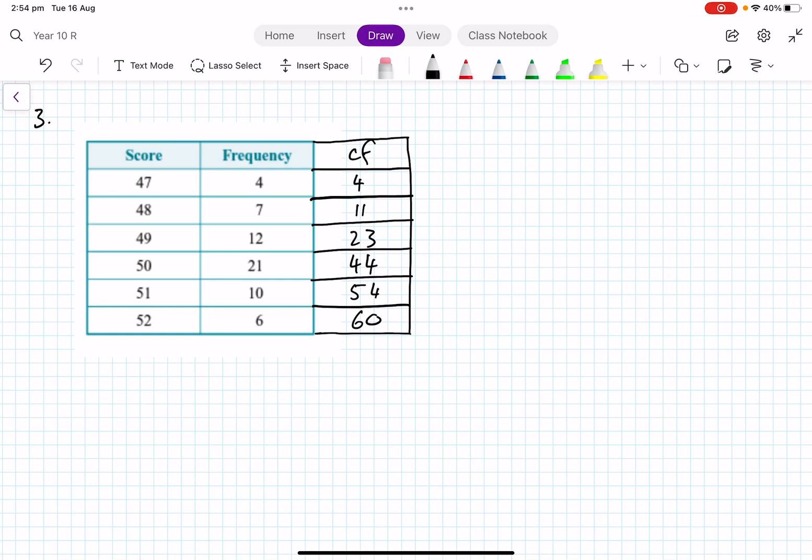So I've got four, then I add the 7 to 4, you get 11, 12 to 11, it's 23, etc. So 60 is the total number of scores basically.